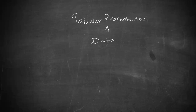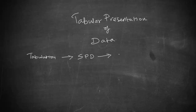Tabular presentation of data. Data can be presented in three forms, one of which is presentation of data in tabular form, also otherwise called as tabulation. Tabulation is nothing but systematic presentation of data — you are going to present the data in a systematic way by using what is known as a statistics table.